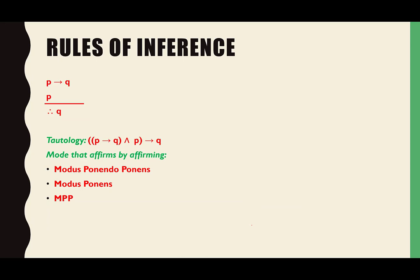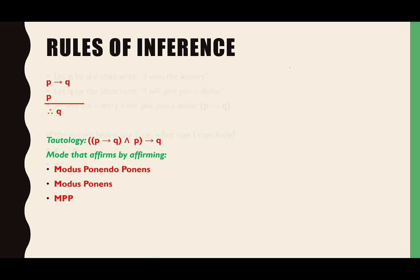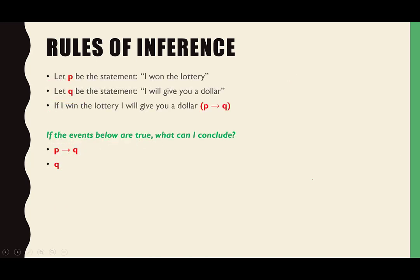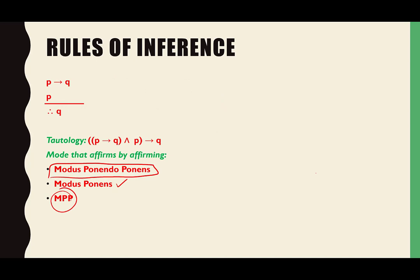This tautology is called modus ponens — the full name is modus ponendo ponens — Latin for 'mode that affirms by affirming.' We often just call it modus ponens or MPP. In a proof, when you make a step using modus ponens, you would write 'by modus ponens' next to it as your justification.